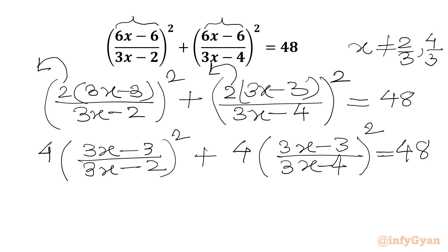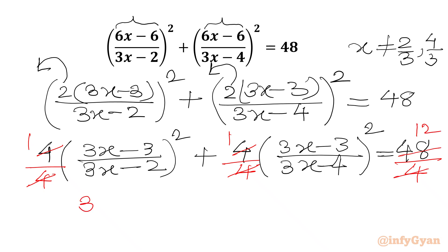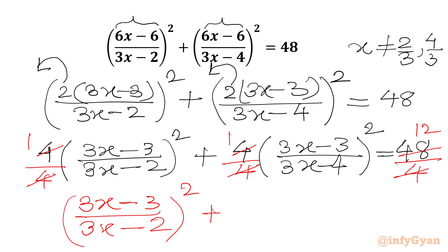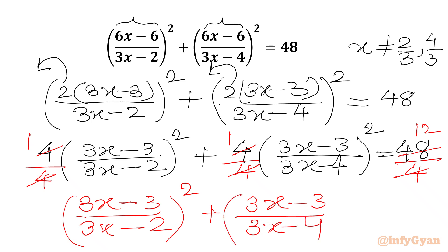Now we will divide our equation by 4 on both sides. So 4 over 4 is 1 and 48 over 4 is 12. We can write our equation as (3x minus 3) over (3x minus 2), whole squared, plus (3x minus 3) over (3x minus 4), whole squared, equal to 12.